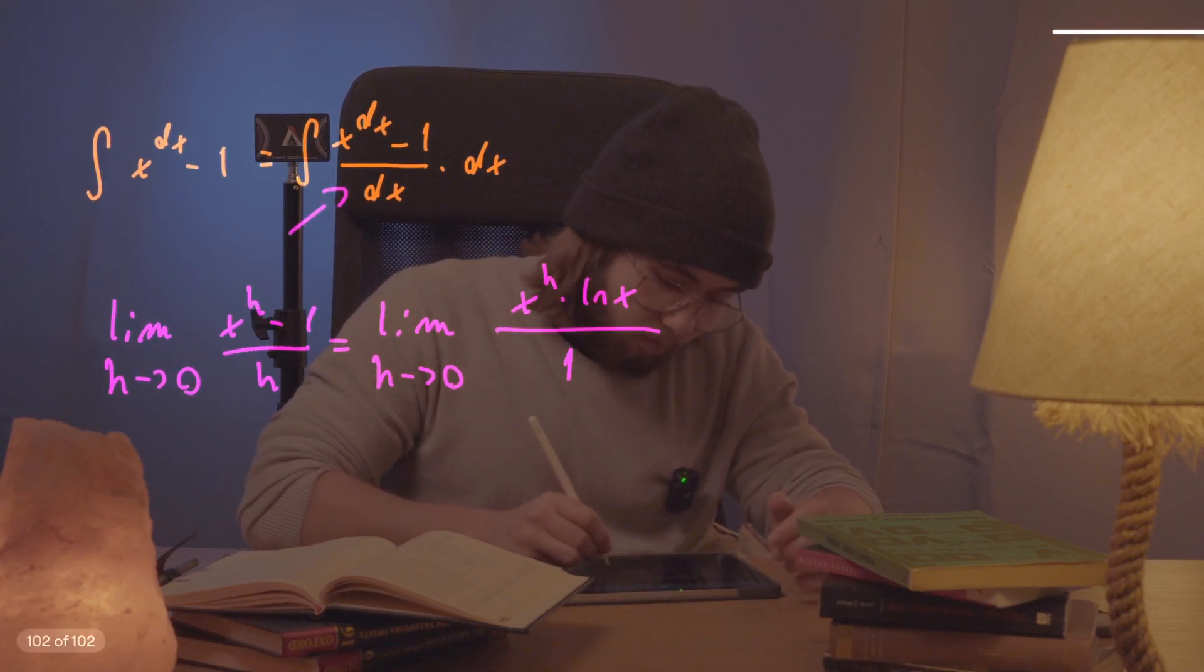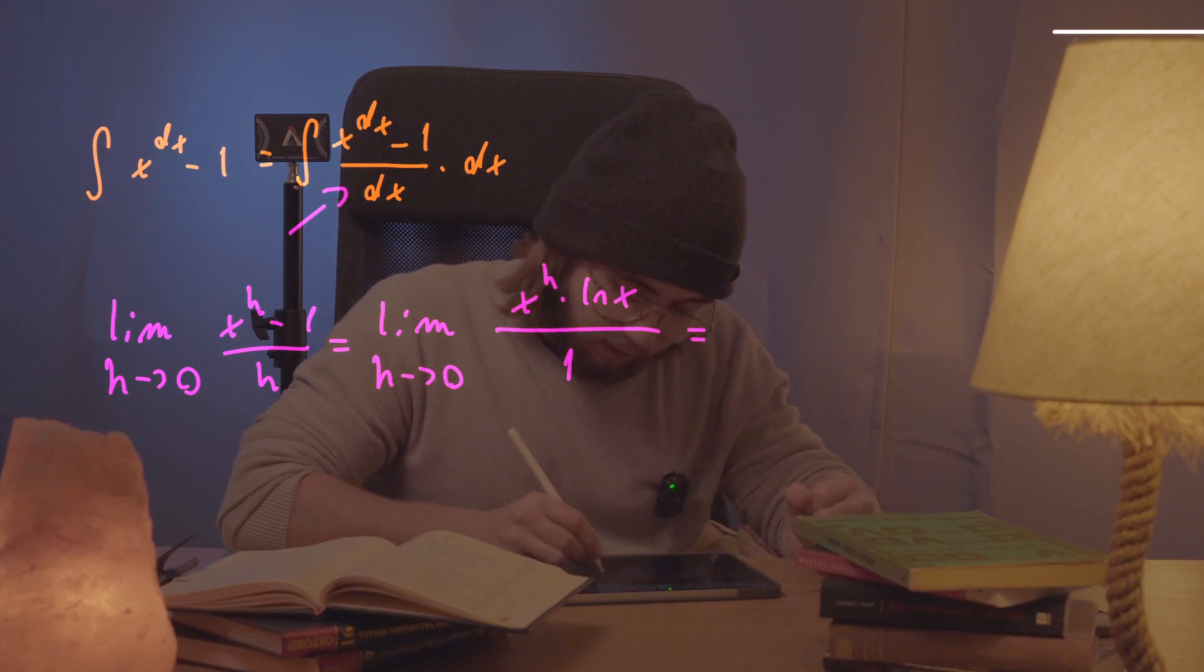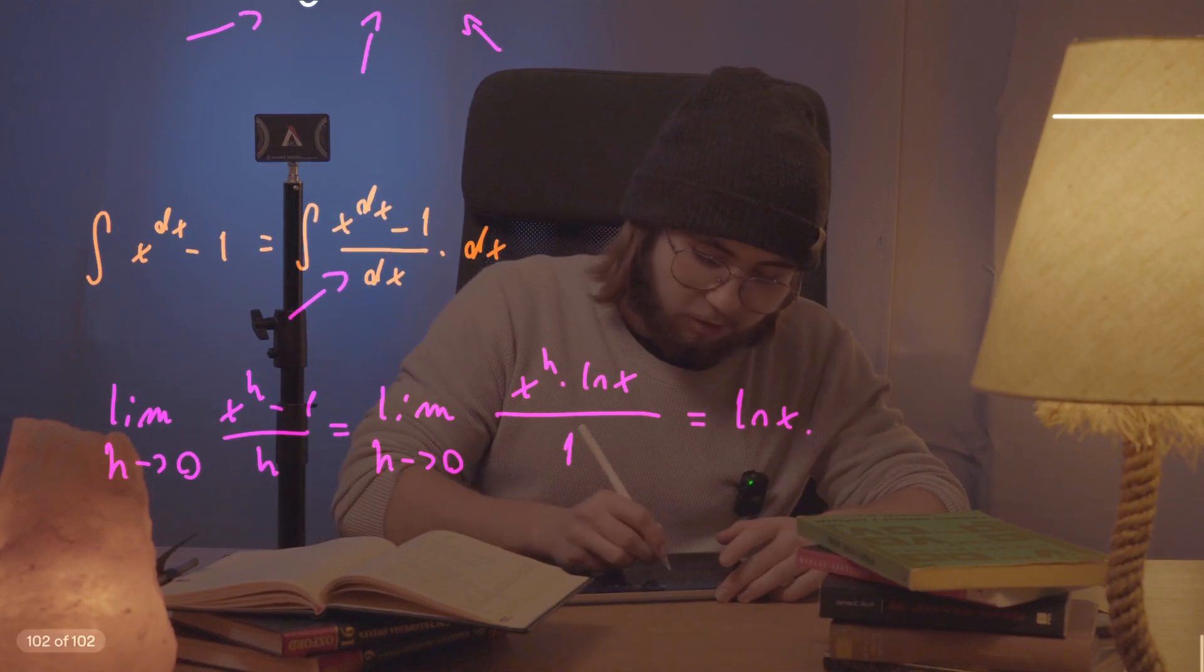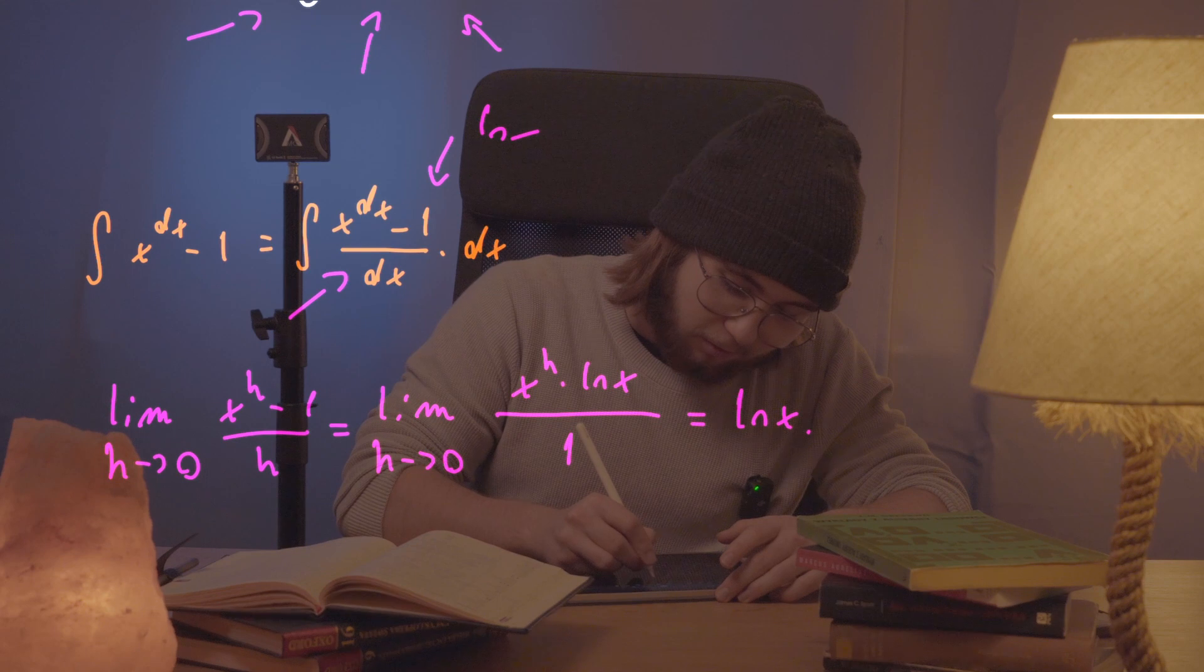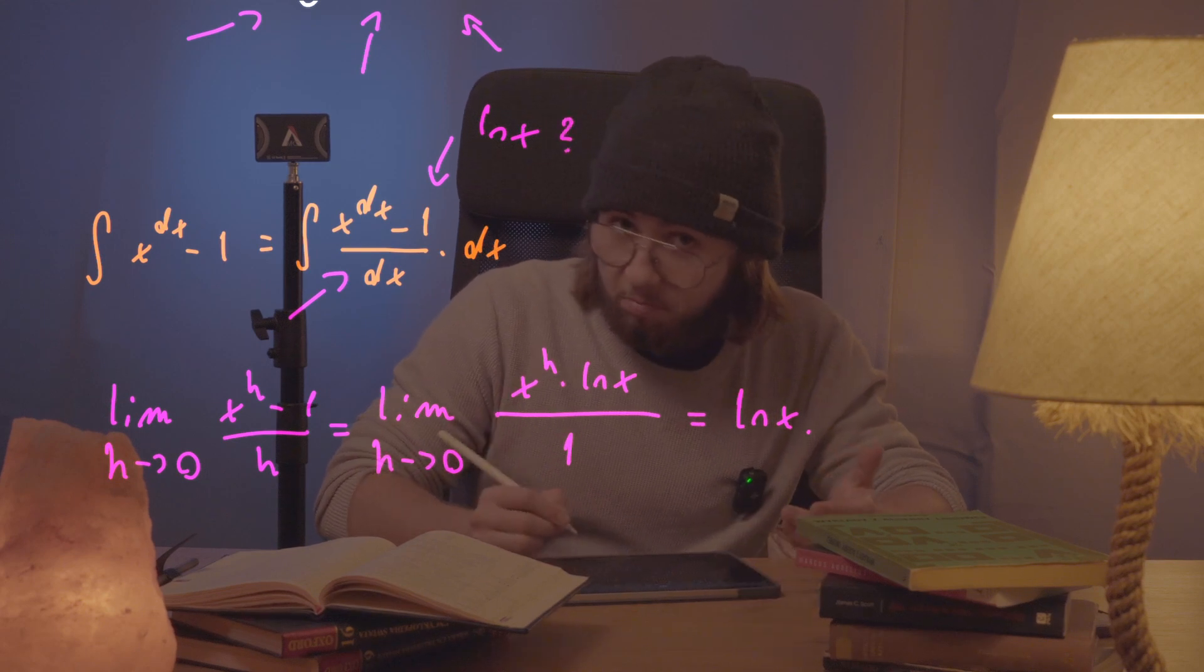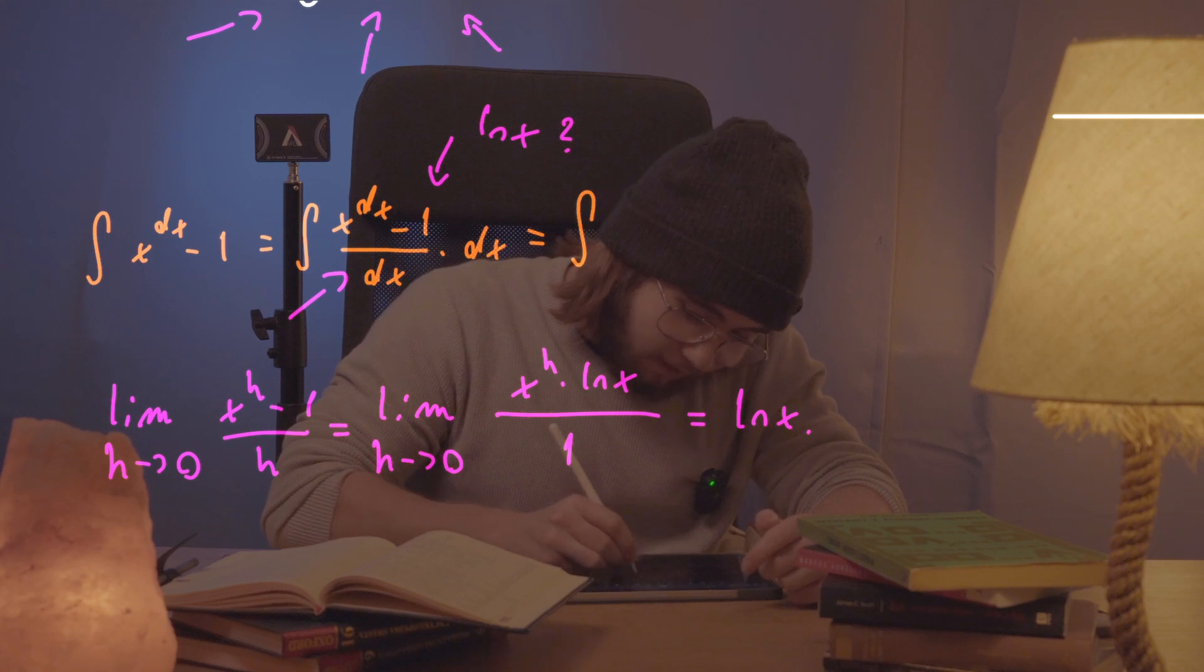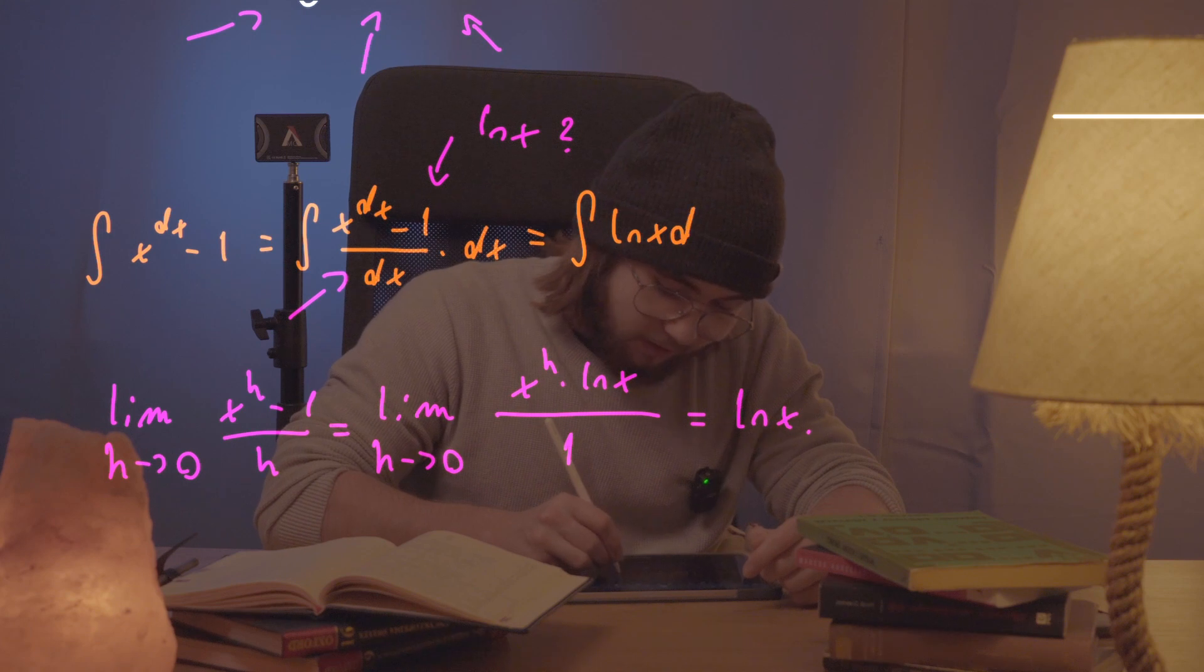And so as h approaches zero, x to the power of h is going to approach one. And so this entire limit is going to be just equal to the natural log of x. So, well, what the hell? So this thing right over here is going to be equal to the natural log of x? Well, yeah. And so we can just go on and rewrite this entire integral as the integral of the natural log of x dx.